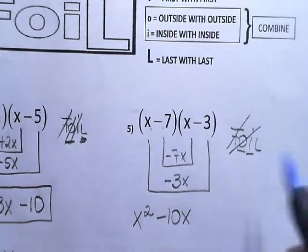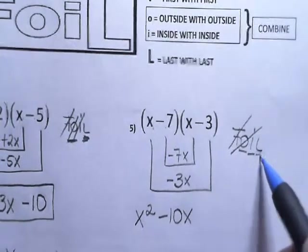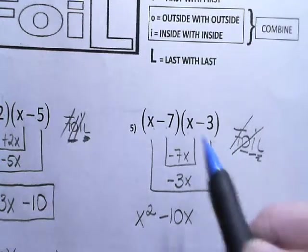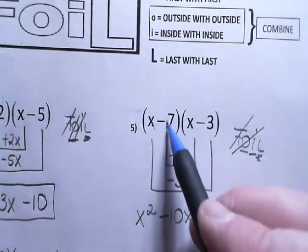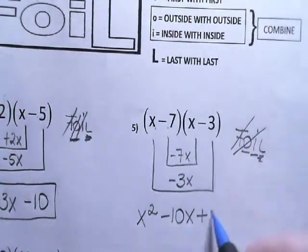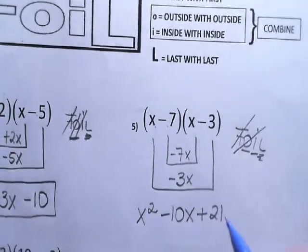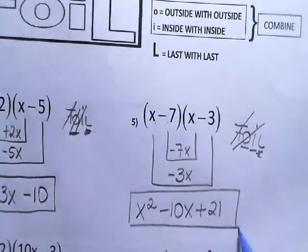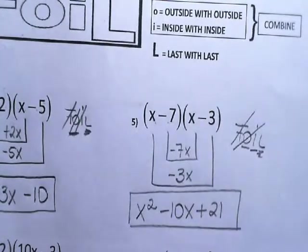And the last one is the L, which stands for last times last. So negative 7 times negative 3 is positive 21. And that's my answer.